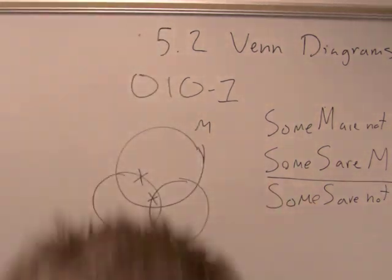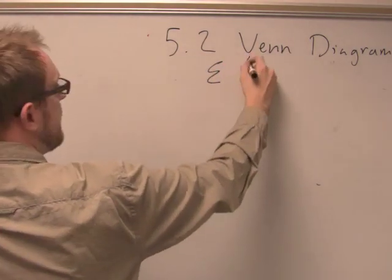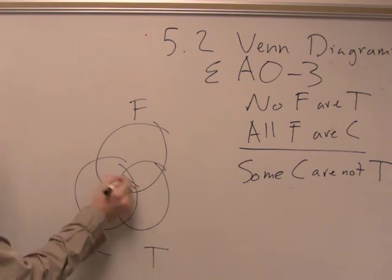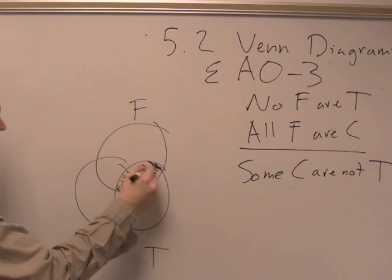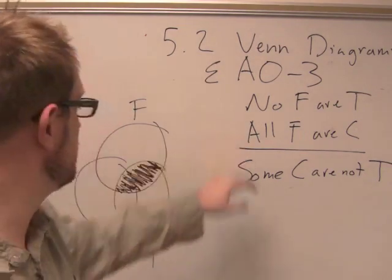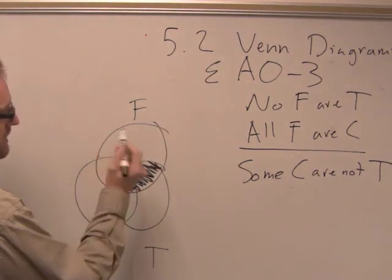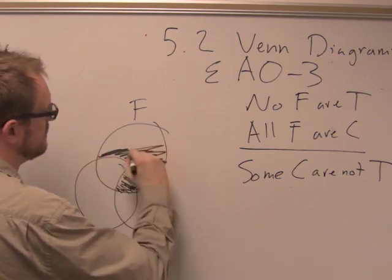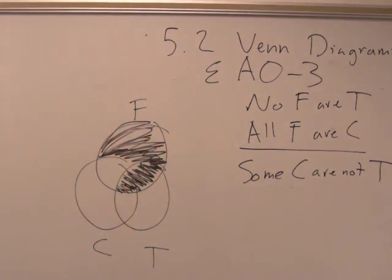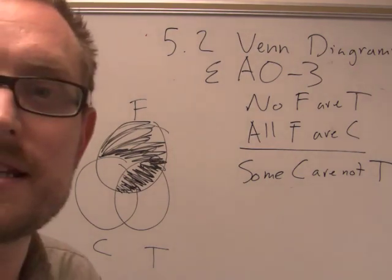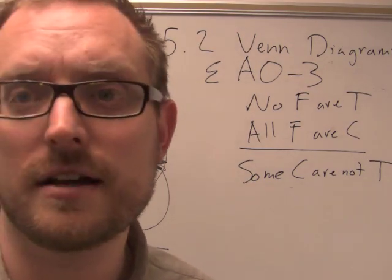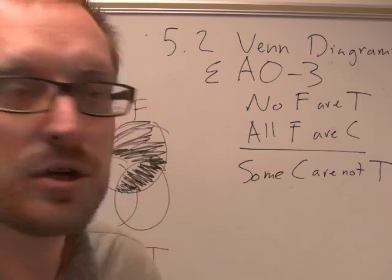Let's do an EAO-3. E, right, we just shade in our little in-between space here, what looks like a football, no F are T. And then the next premise says that all of the F's are actually C's. So it looks like this. We draw it in. So then the next question is, so obviously this is to say some C are not T. We don't see that in the diagram. So we know from the get-go that it's not unconditionally valid. But can it be conditionally valid?